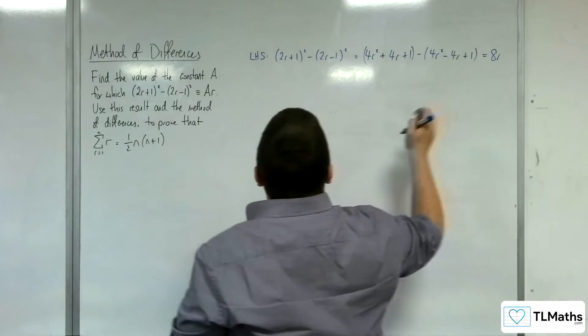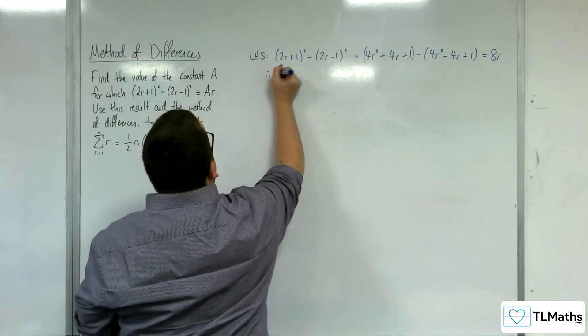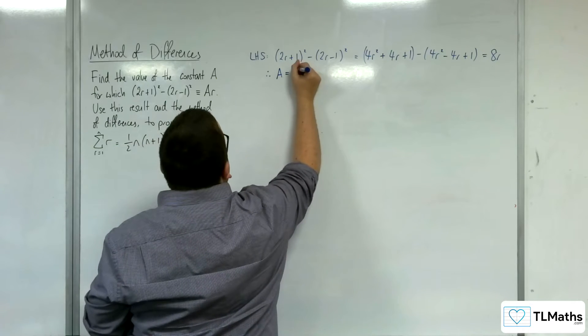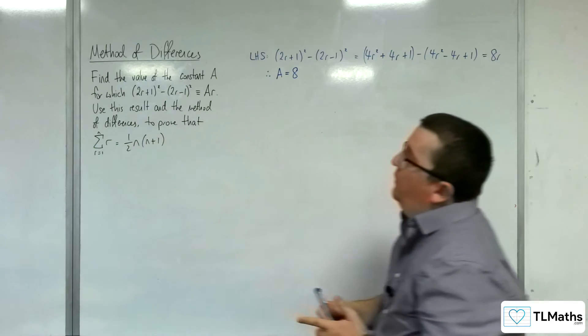And 1 take away 1 is 0. So therefore, a is equal to 8. That's what we wanted to find.